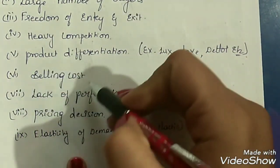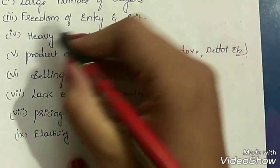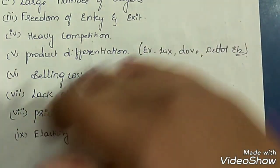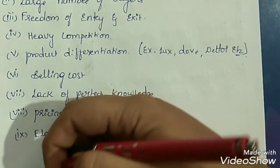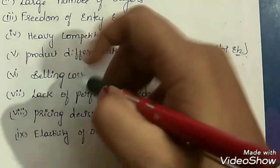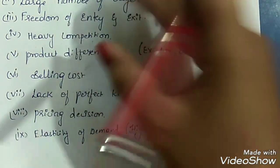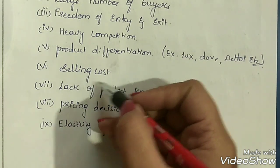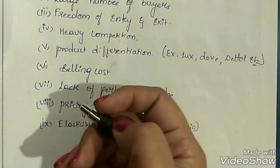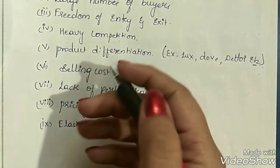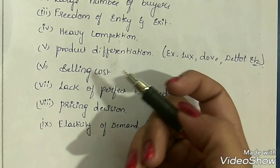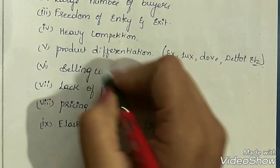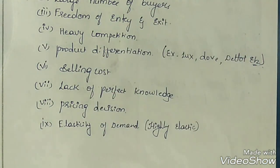Selling cost is a main and very important feature of this type of market. Because there is heavy competition, firms try to attract customers by providing demos, promotions, or advertisements, and they appoint salesmen who provide attractive services to customers. Hence every firm incurs selling cost. Selling cost refers to the cost incurred for selling a product — for example, expenditure on advertisements, salaries for salesmen, door-to-door services, coupons, and gift vouchers to attract customers.